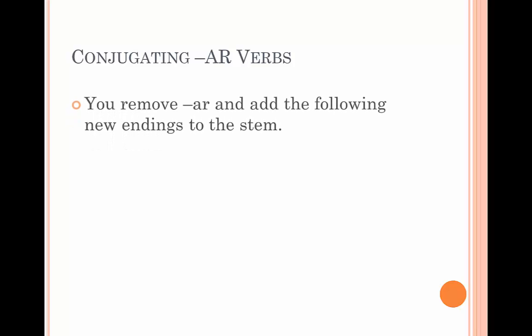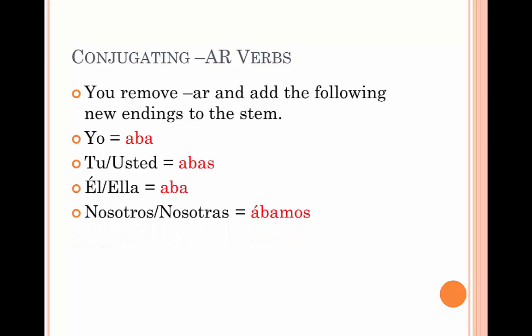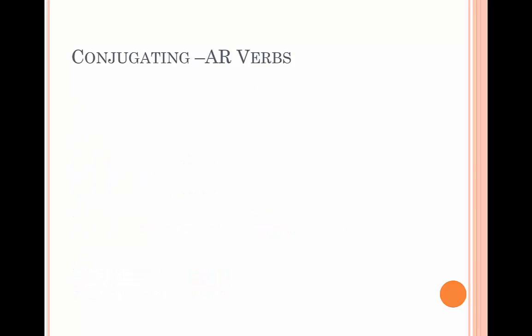Conjugating AR verbs. For verbs that end in AR, we have to add these following endings after removing the A and R from the stem. We add aba for yo, abas for tú o usted, aba for él o ella, ábamos for nosotros o nosotras, abais for vosotros, vosotras o ustedes, and aban for ellos o ellas.